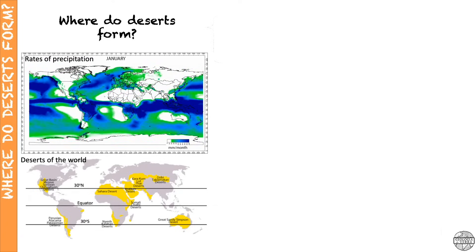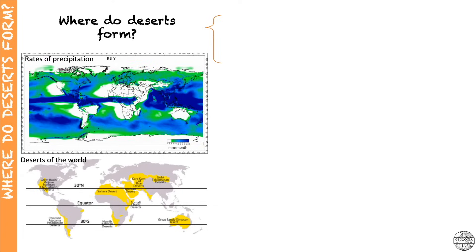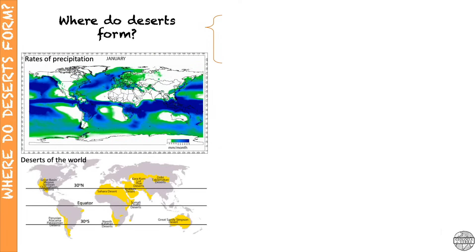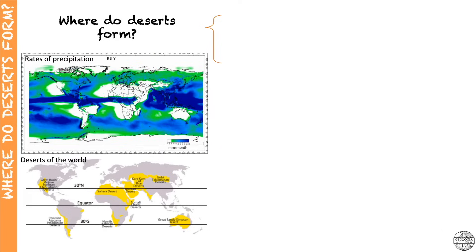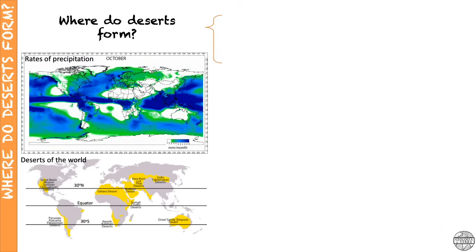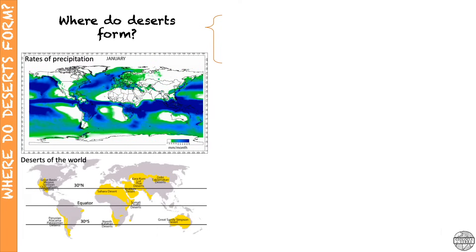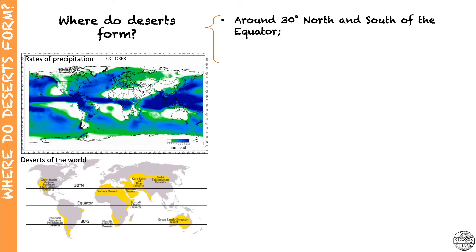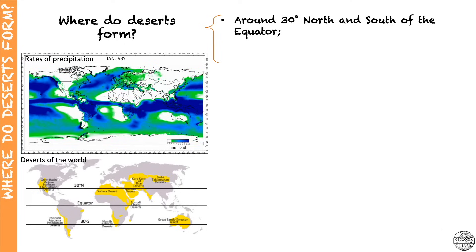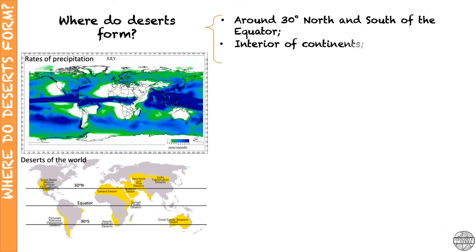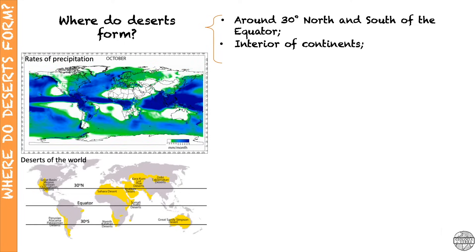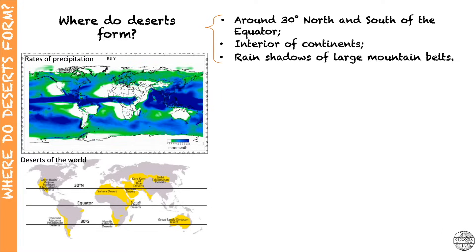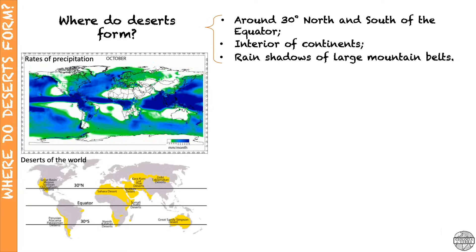So what are the common geographic locations where deserts are formed? Well, deserts are usually formed between 15 and 30 degrees north and south of the equator, in the interior of continents, and in rain shadows of large mountain belts.